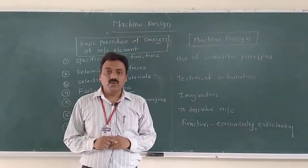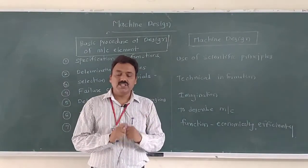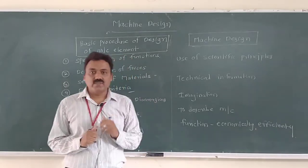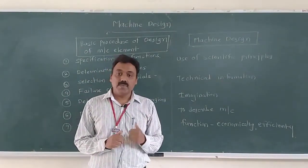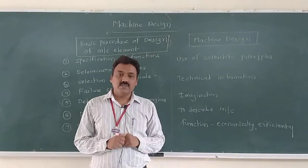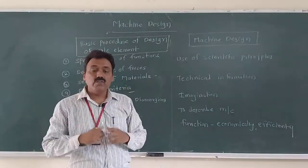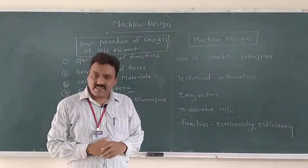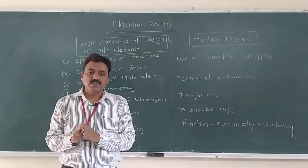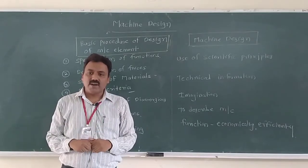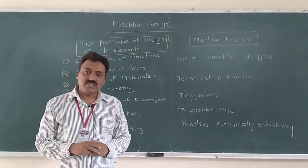Now we will take the example of a two-wheeler, that is a bike. A bike has various parts: the engine, which is the core or heart of the bike; then we have the air box, clutch, brake, wheels, chassis, seat, fuel tank, and handle. These are the basic elements that constitute the mechanical system, and all these parts are produced by using machines or machineries.